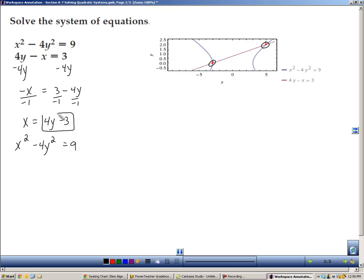Since I know that x equals 4y minus 3, I'm going to take 4y minus 3 and put it in place of the x. So 4y minus 3 squared instead of the x squared minus 4y squared equals 9.